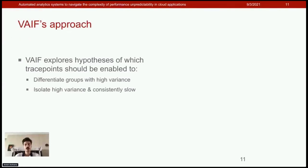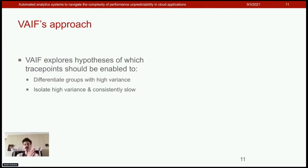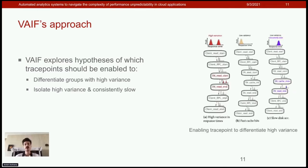VAIF identifies requests whose traces exhibit identical critical paths but which exhibit high response time variance. VAIF then identifies edges of these traces that contribute most to the variance, and from there enables additional trace points in the code regions corresponding to these high-variance areas. This way, VAIF is able to differentiate slow code paths from fast ones and, from these slow code paths, isolate code with unpredictable performance.